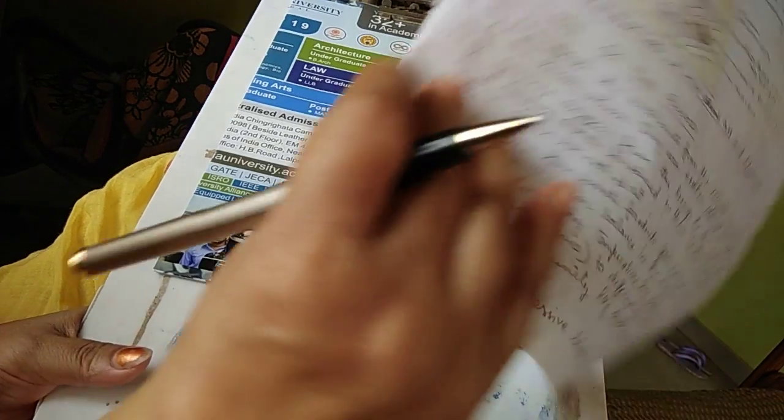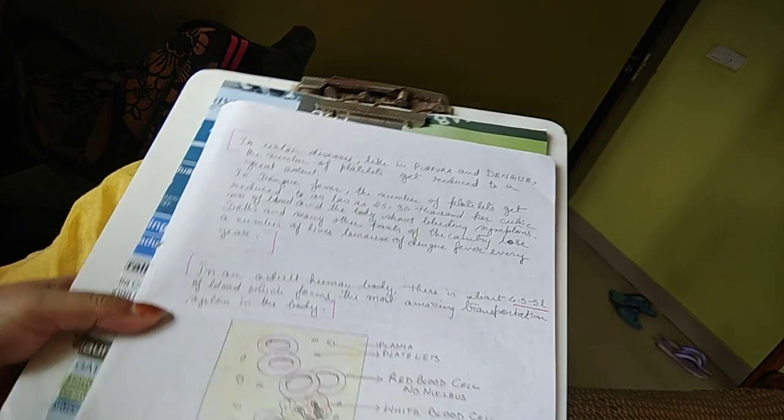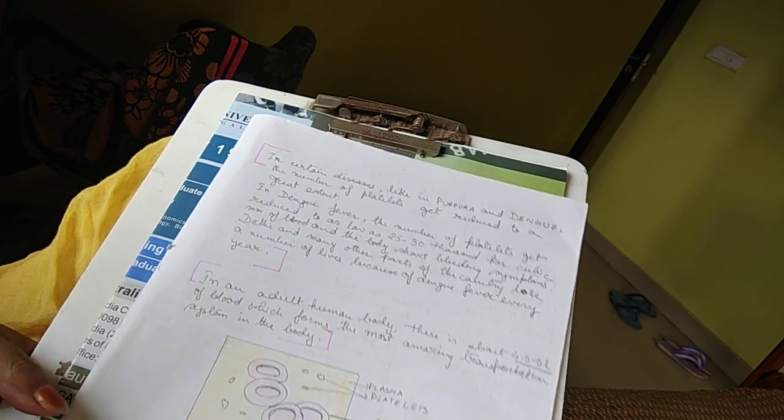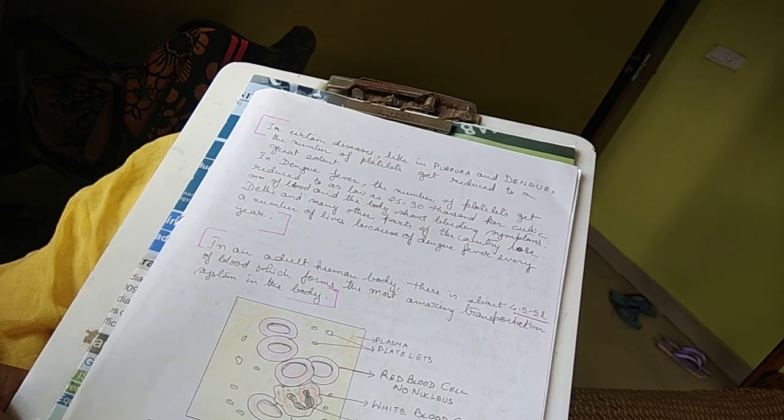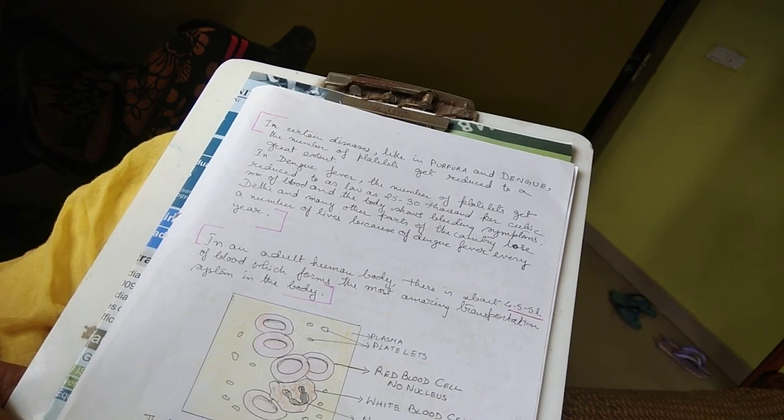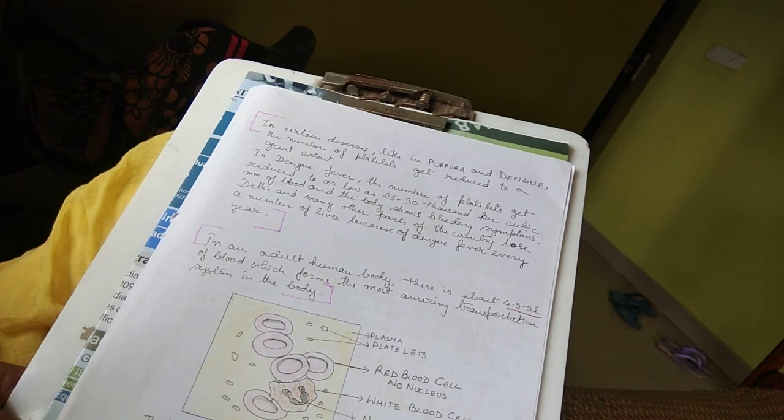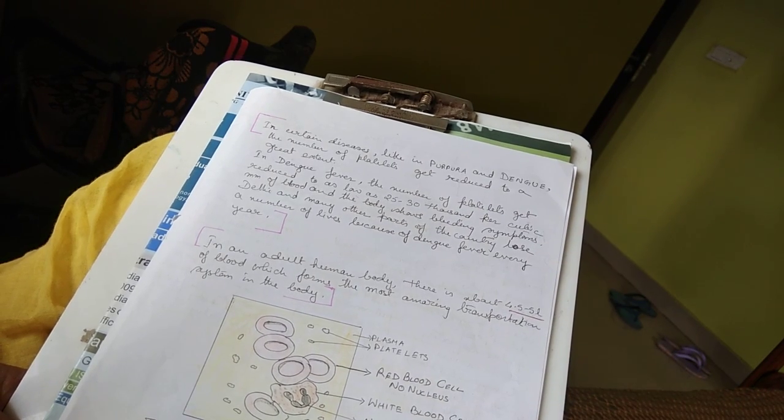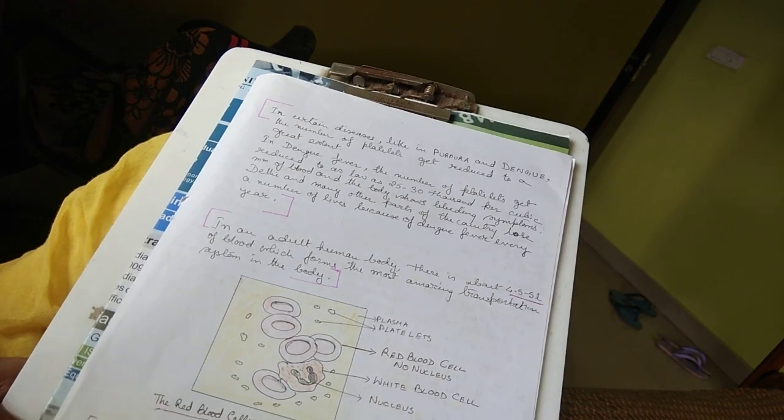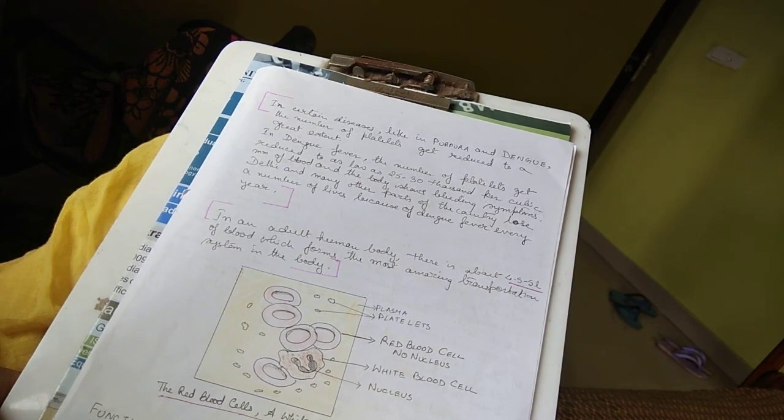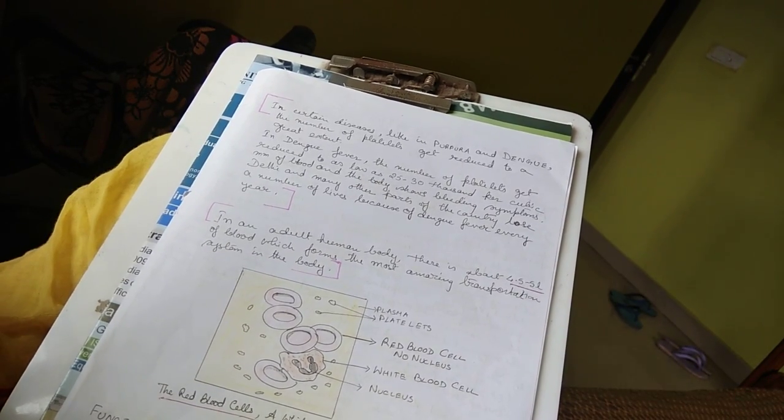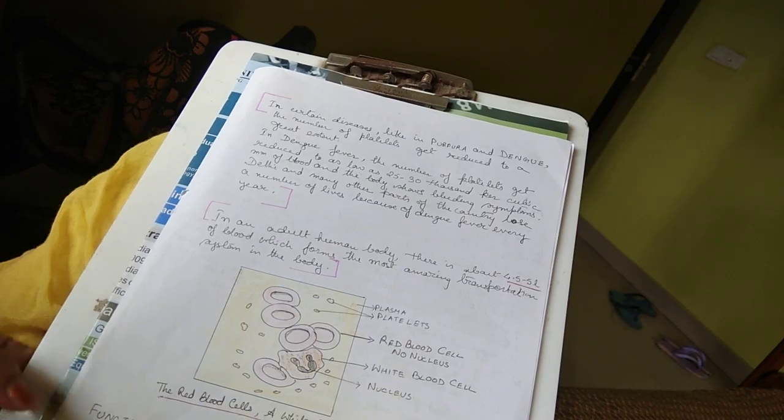In different diseases like purpura and dengue, the number of platelets get reduced to great extent. In dengue fever, the number of platelets can be reduced to as low as 25,000 to 30,000 per cubic millimeter of blood and the body shows bleeding symptoms. Delhi and many other parts of the country lose a number of lives because of dengue fever every year. In an adult human body, there is about 4.5 to 5 liters of blood which forms the most amazing transport system in the body.